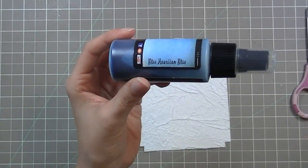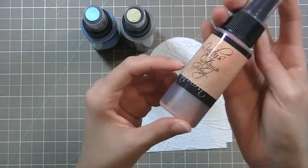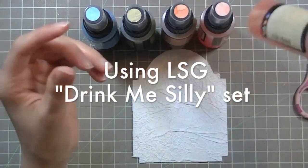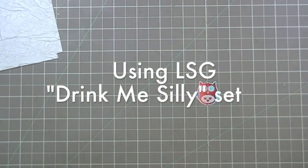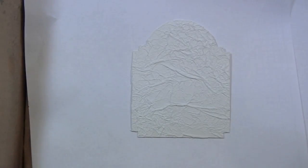Now I'm going to be using the Lindy Stamp Gang Drink Me Silly set. These are all the colors from the set. And these are the ones that I'm going to be using throughout the project. I'm going to take my box and start spraying. I'm going to be using a bit of bubbly first.